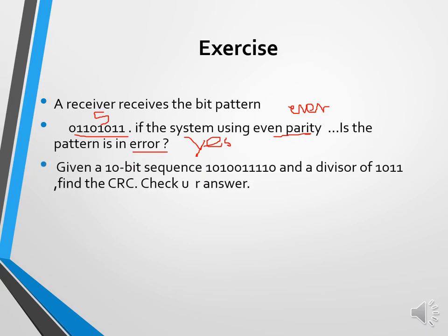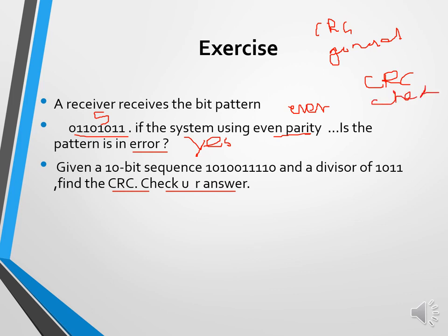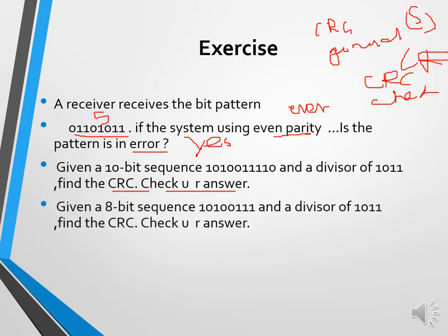Given a 10-bit sequence and a divisor of 1011, find the CRC and check your answer. Finding the CRC means we need to perform the CRC generator (sender side). After that, to check the answer, we need the CRC checker (receiver side). Students, you should solve these exercise questions yourselves and upload your answers to Google Classroom.